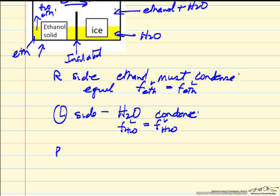So now on the right side, ice will melt because its fugacity is higher than the fugacity of water in the liquid phase because we diluted the water, lowering the fugacity of water in the liquid phase. So ice will melt, and on the left side, ethanol will melt.